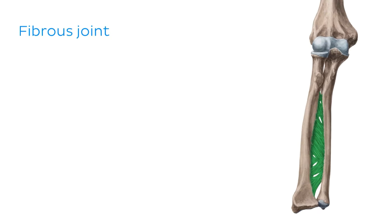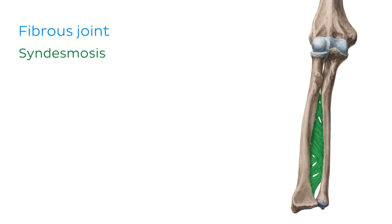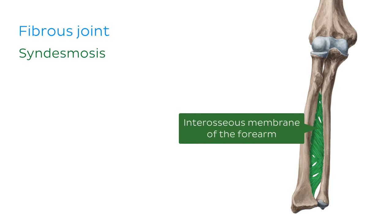Lastly, we have a syndesmosis, which is formed by ligaments and a strong membrane that holds two bones in place. We can see an example of this here, where the interosseous membrane runs between the radius and the ulna.